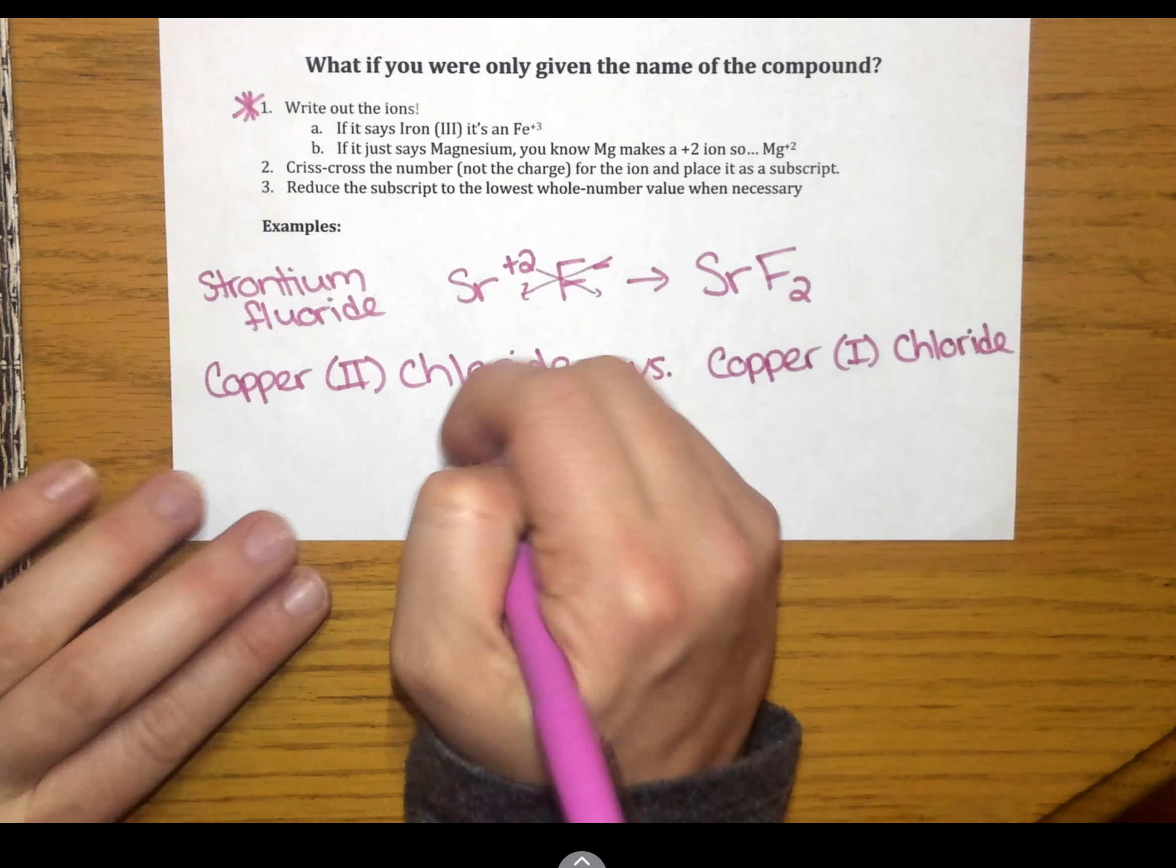And for each of these compounds, all we're going to do is we crisscross again. And we have CuCl2 is copper 2 chloride. And copper 1 chloride is just CuCl. So, just that slight difference in the name, that Roman numeral, is going to give me two different compounds.